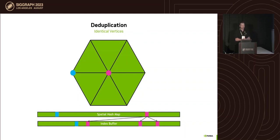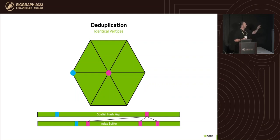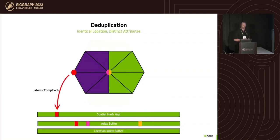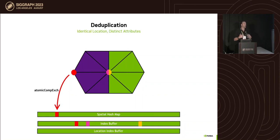In another pass we walk through the triangles and simplify the mesh by checking the hash index and propagating in the index buffer: instead of having three of the same vertex, we have one and just modify the index buffer. That's how we deduplicate the mesh. However, in some situations we have different attributes — for example UVs from different UV islands.